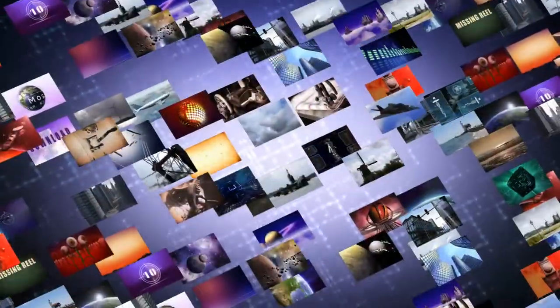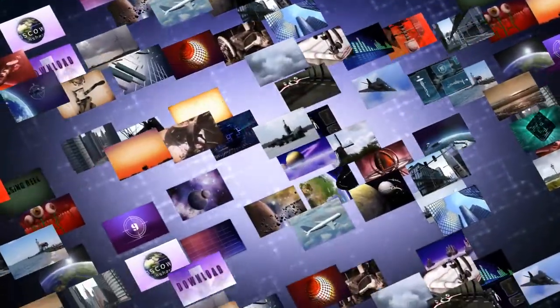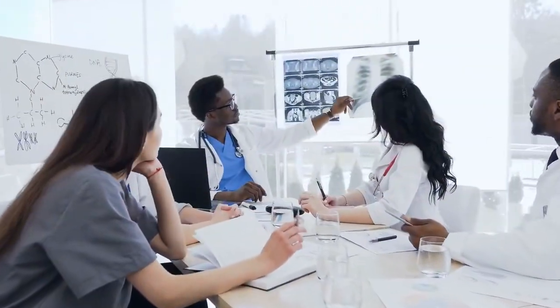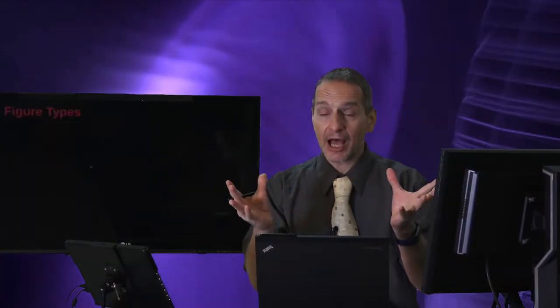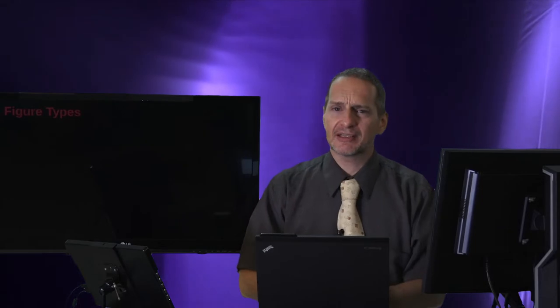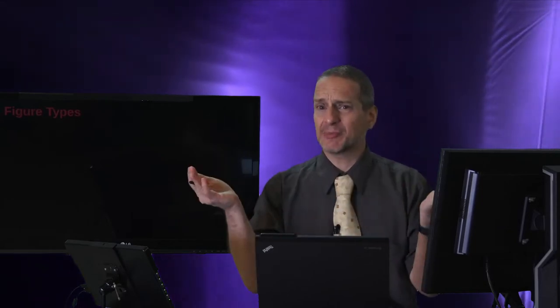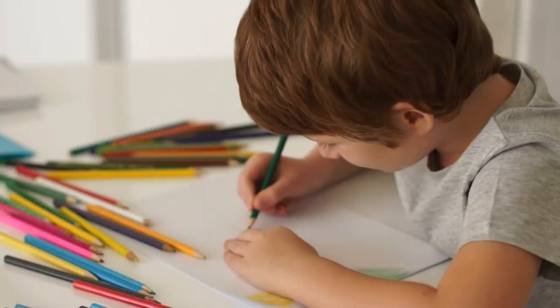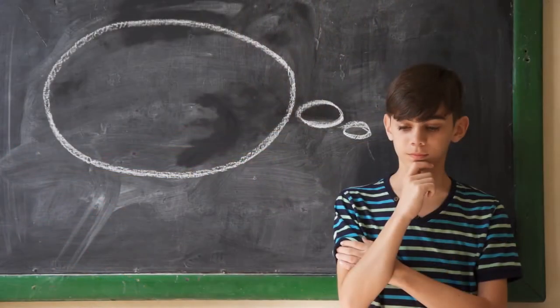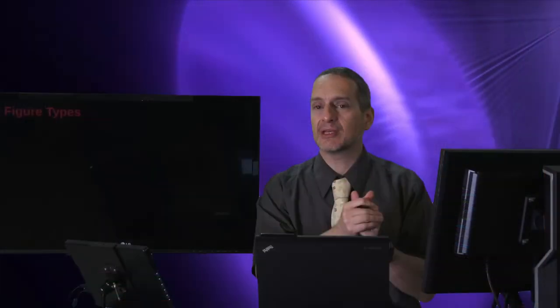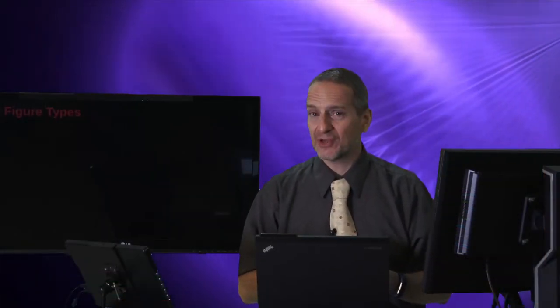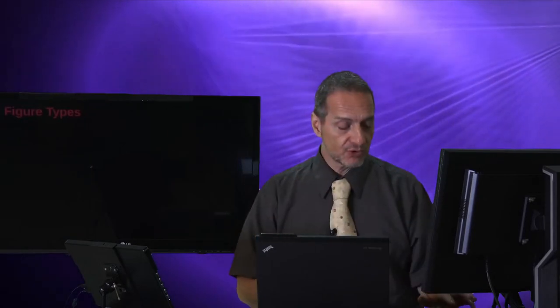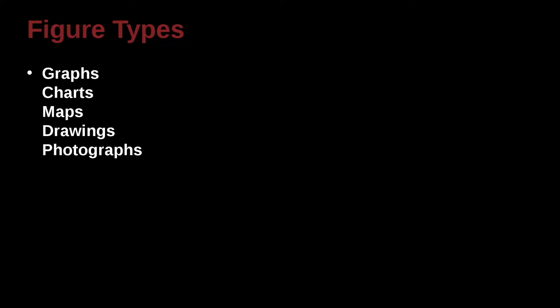There are pictures, video capture frames, X-ray images, models, theoretical constructs — all kinds of things. A figure could basically be anything. You could even have children's drawings if you were experimenting with children's ideas. So there's no one way to do a figure, but there are some basic rules from the APA and MLA to help us get an idea of how to do this.